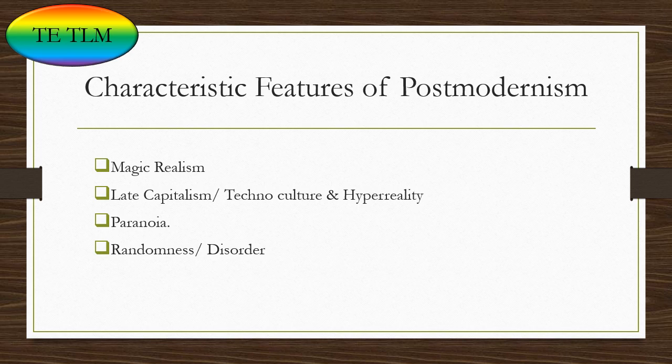Another feature of postmodernism is magic realism, where objects are depicted in a surrealistic way — the best example being Harry Potter. Another feature is late capitalism, technoculture, and hyperreality, in which the use of technology and hyperreal — that is, exaggerated — information is seen. This culture of late capitalism in postmodernism was analyzed by American Marxist critic Fredric Jameson; a good example is the movie Indian.